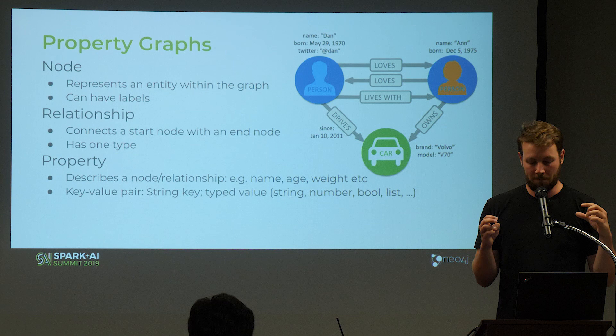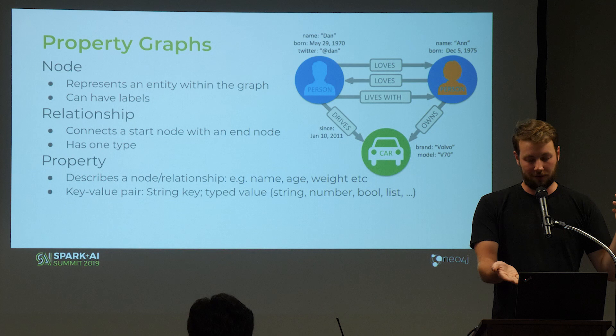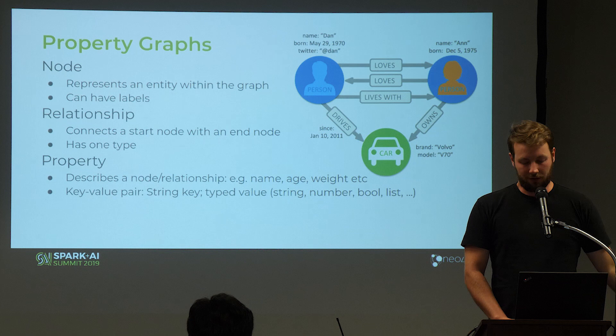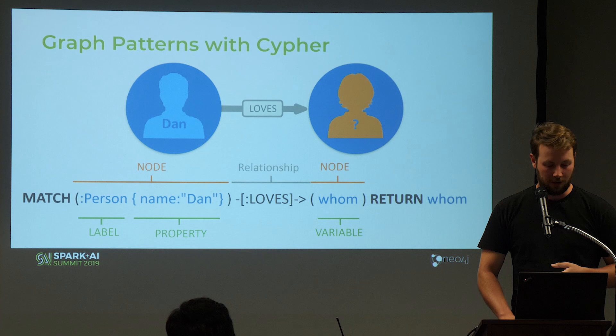Connections between nodes are called relationships. For example, the person Dan loves another person whose name is Ann. Relationships can also have properties — like Dan drives a car since 2011. This is the property graph model.